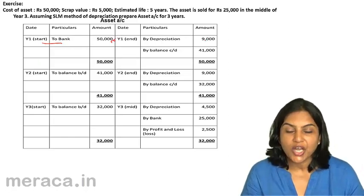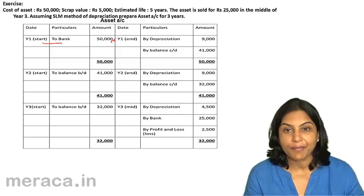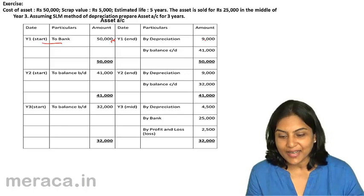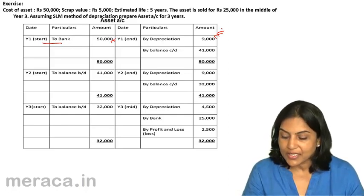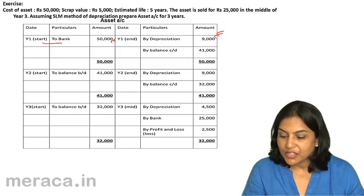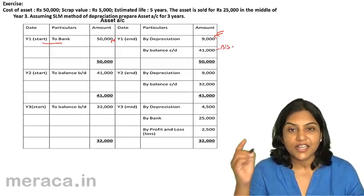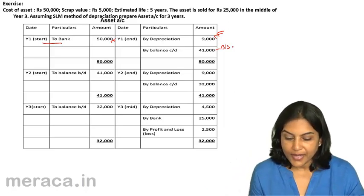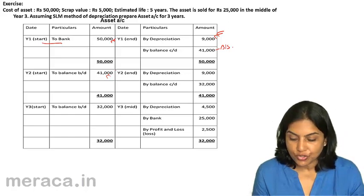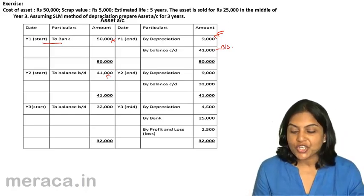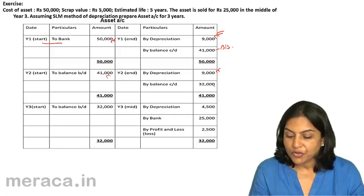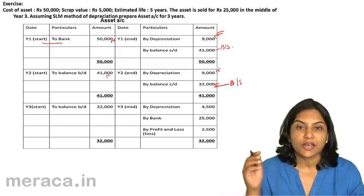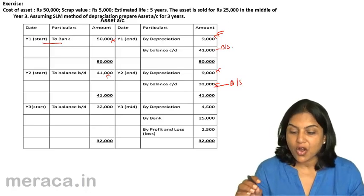At the end of year 1, we charge depreciation. The entry is depreciation account debit to asset account, so the asset account is credited by $9,000, and the balance in the asset account is $41,000. This $41,000 goes to the balance sheet in year 1. We bring forward $41,000 in year 2 and again at the end of year 2 charge depreciation of $9,000. Asset account is credited $9,000, making the value of the asset $32,000, which is shown on the asset side of the balance sheet.